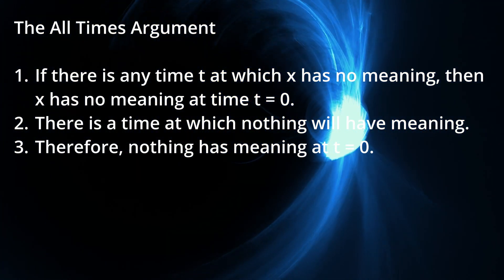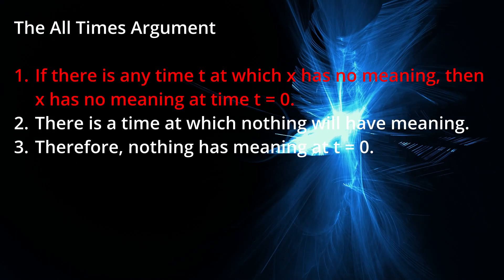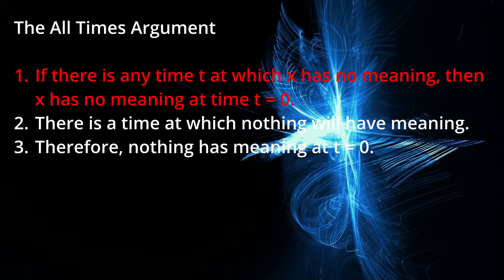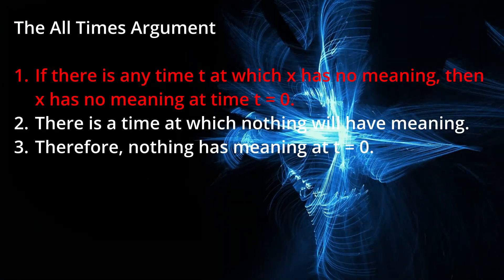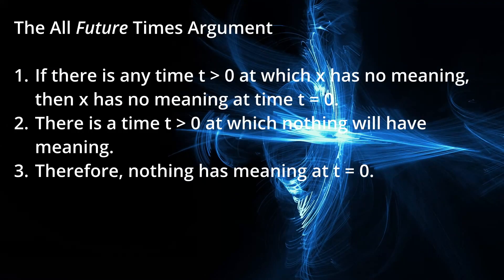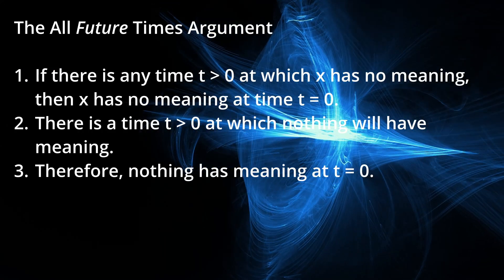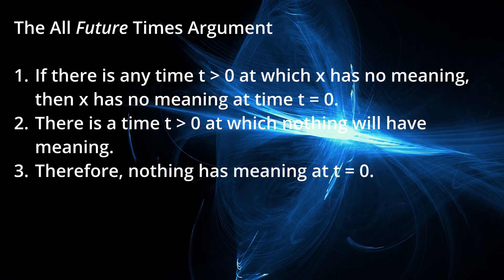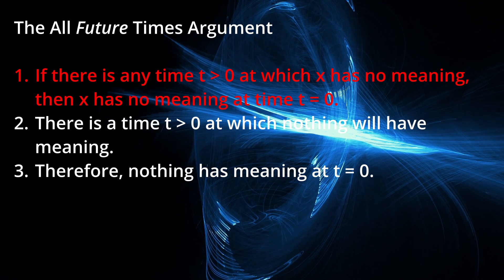Again, no argument has ever been presented, or to my knowledge even attempted, for the first premise. In fact, as it is currently stated, it's flatly ridiculous. So let's go ahead and steel man it a little bit more and say that if there is any time t is greater than 0, at which x has no meaning, then x has no meaning at time t equals 0. This is probably easier to defend. And yet, no defense of it has been presented. I can think of no defense that can be presented.